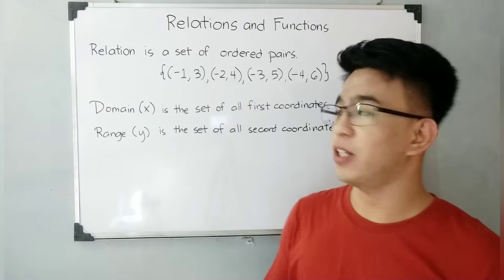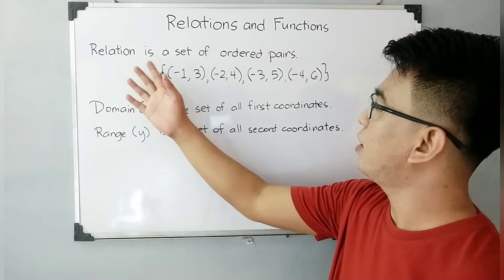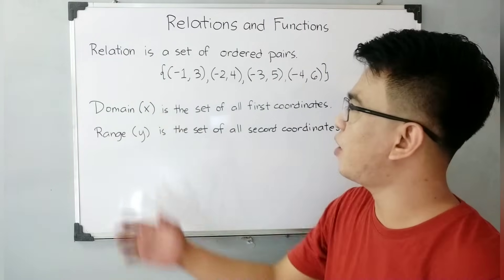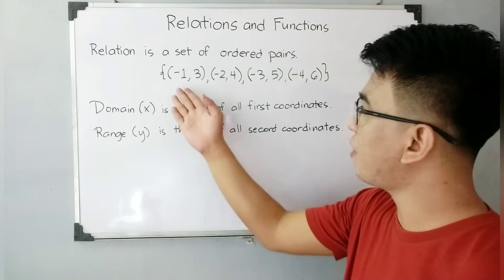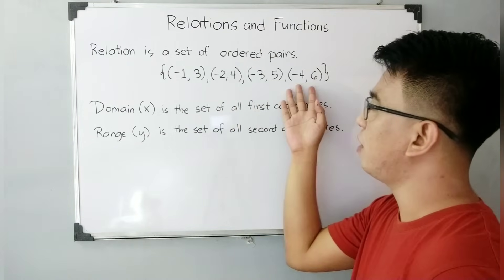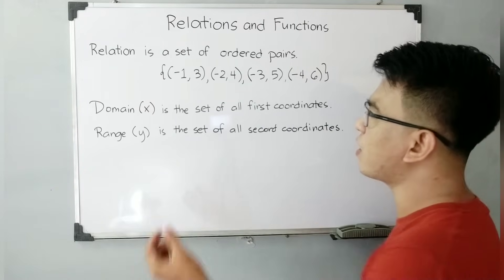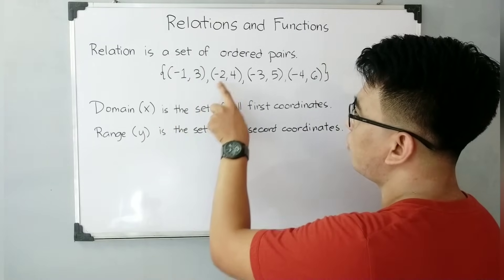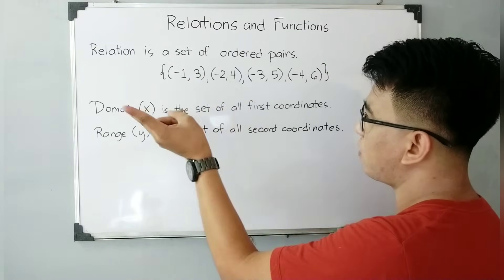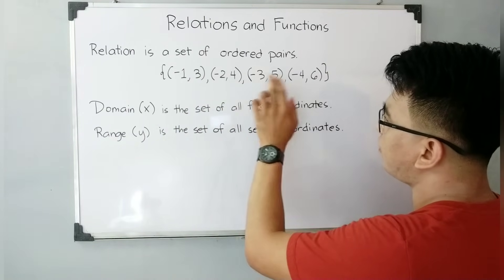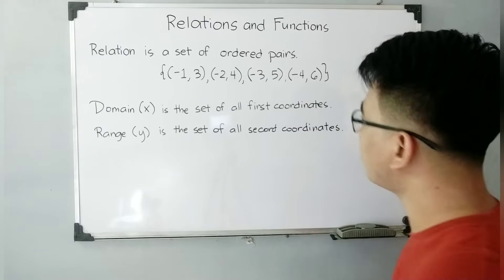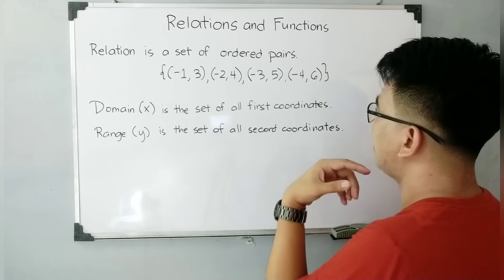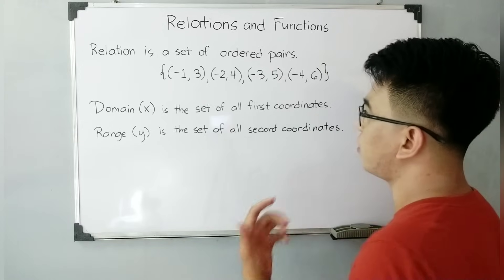We have here the definition of relation. Relation is a set of ordered pairs. I have here an example of a relation with four different ordered pairs: negative 1 and 3, negative 2 and 4, negative 3 and 5, and negative 4 and 6.